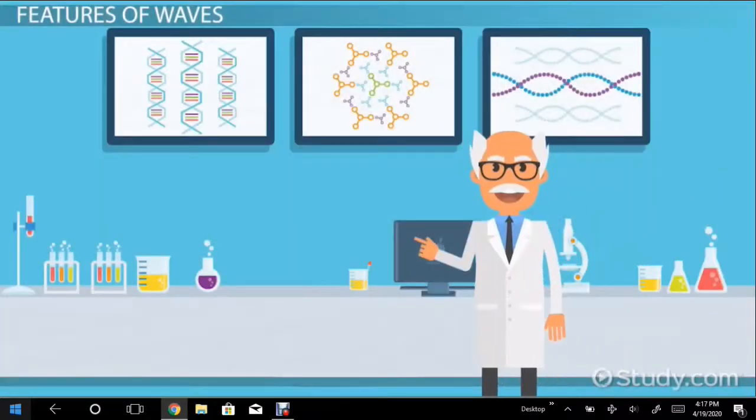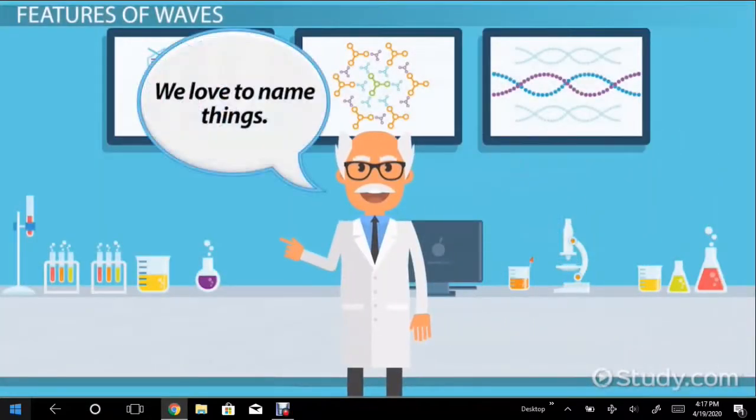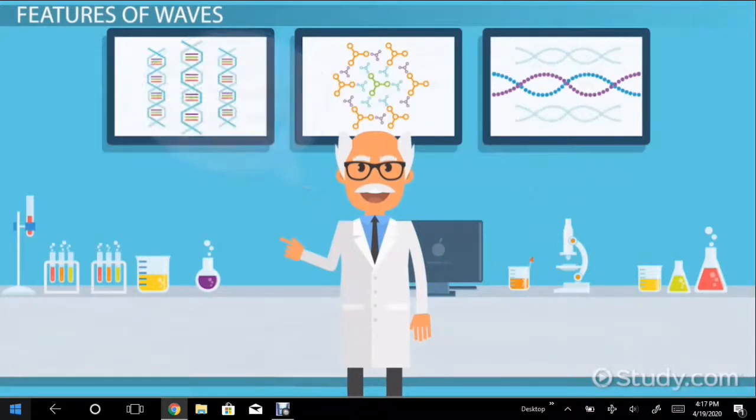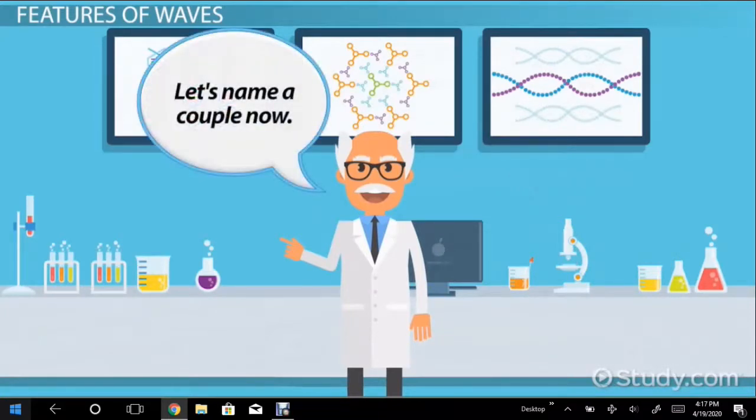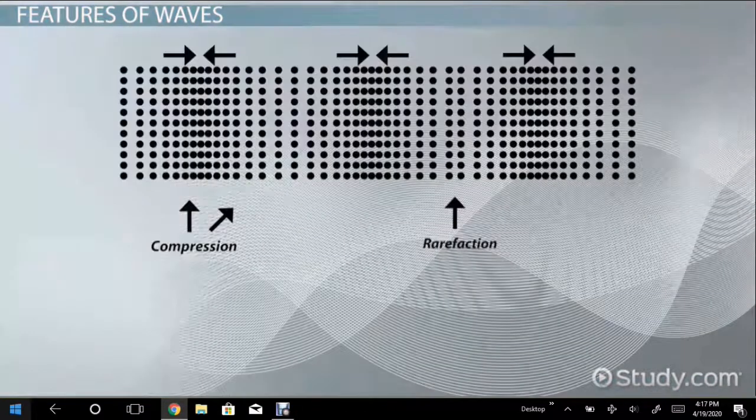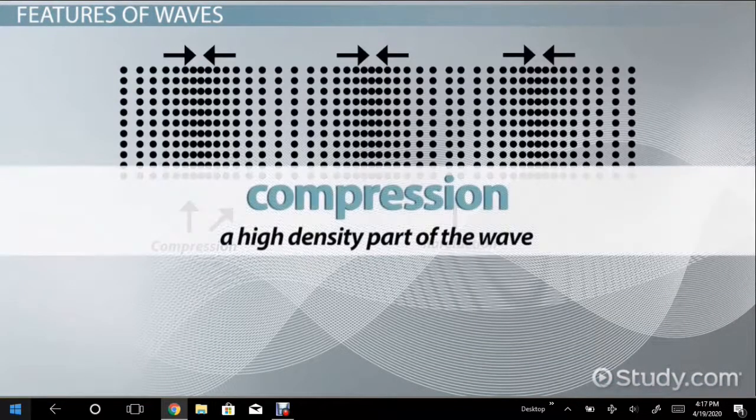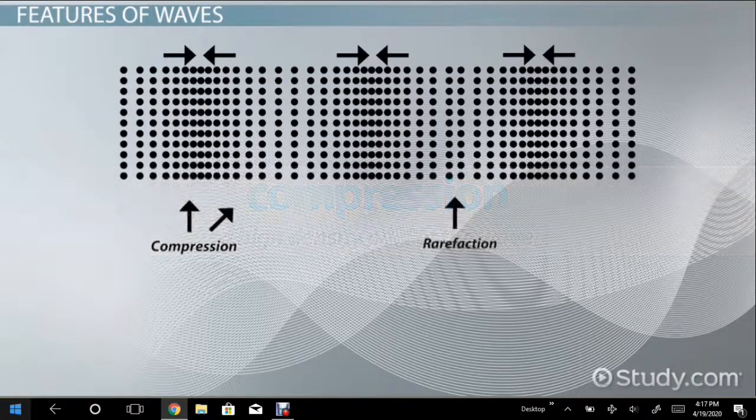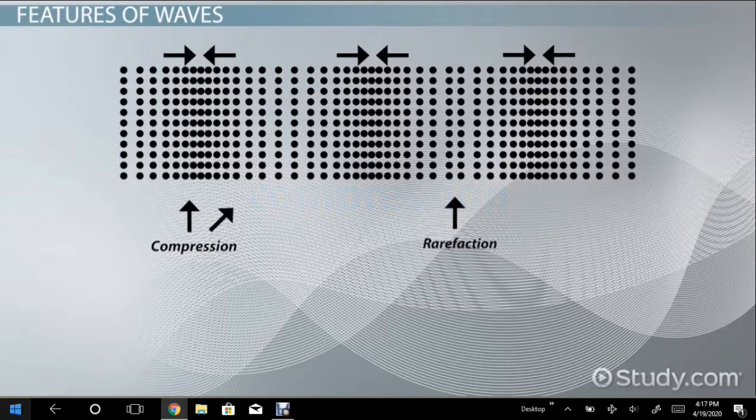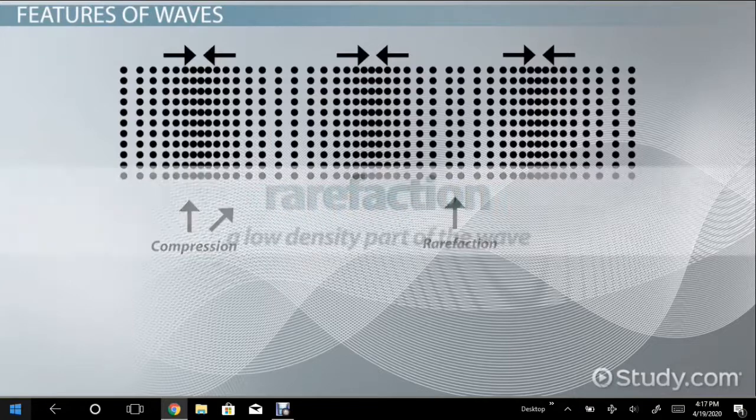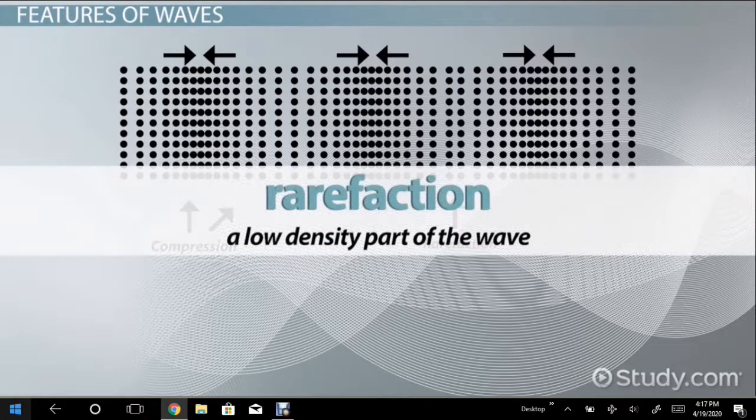Scientists love to name things. It's not enough to name the wave itself. We also need to name some of the wave's features. Two of these are called compressions and rarefactions, as shown here. A compression is a high-density part of the wave, the part where the slinky is compressed. It is the peak of the wave. A rarefaction is a low-density part of the wave, the part where the slinky is most spread out. This is the trough of the wave.